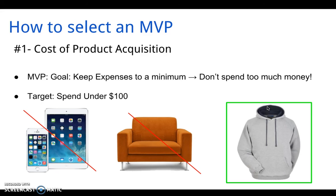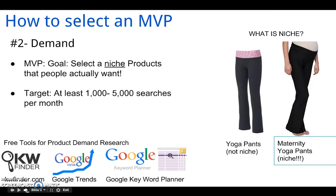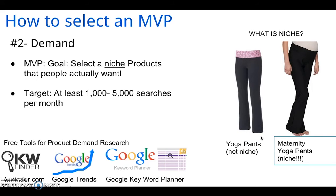Moving on to the second factor I use to evaluate products, which is demand. It goes without saying — if you're running a business, you want to be selling products or a service that people actually want. For an e-commerce site, it's really important to select a niche product. A niche product is something that caters to a very specific or targeted audience. To illustrate, let's use the example of yoga pants. If I were to sell regular yoga pants, I'd be appealing to a very broad audience because there are millions of people, especially women, shopping for yoga pants. Since the demand is really high, so too is the competition. If I'm a new business using the MVP model, I don't have a big marketing budget, so it's going to be hard to compete against established sites selling yoga pants.